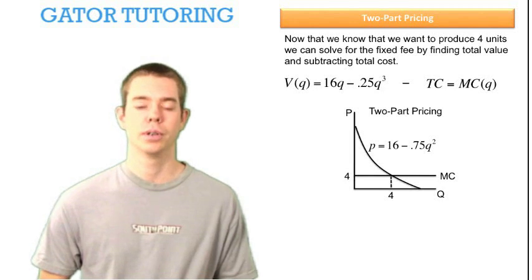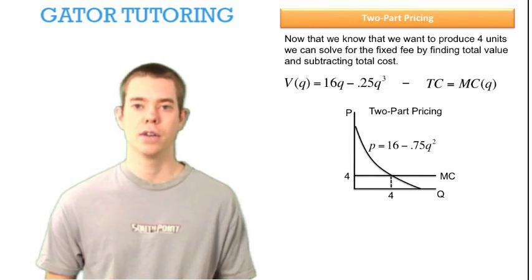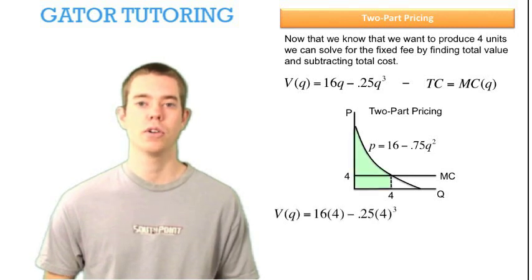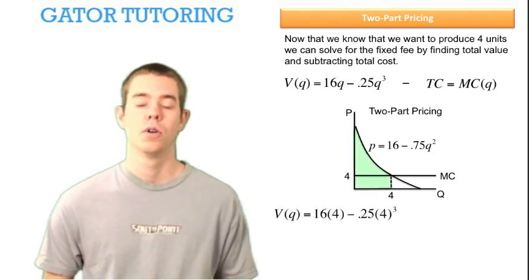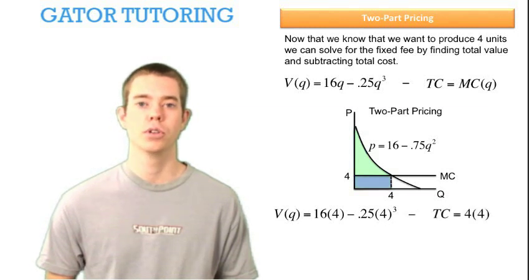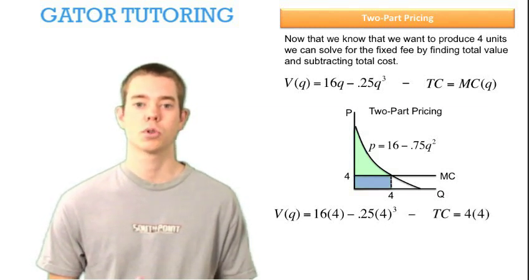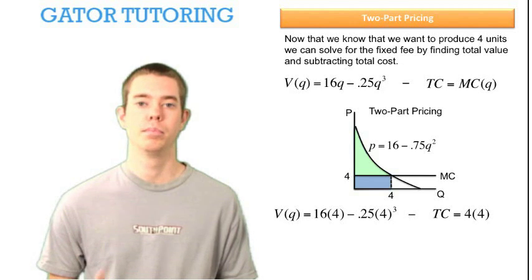Graphically, let's show you what we're doing. We're still going to find that area of the triangle, except it's not going to be a triangle. When we find total value at 4 units, we find the area of this green shape. When we find total cost at 4 units, and we're subtracting it, we're subtracting away the area of this blue rectangle.